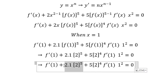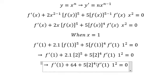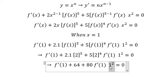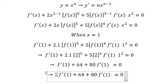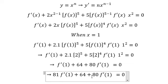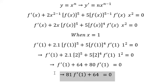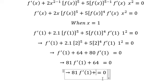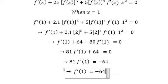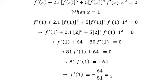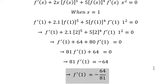For this part we calculate: we get 64 here, and 80 here, and this coefficient is one. So 80 plus one times 80 gives us 81. Now we move 64 to the right side, then divide both sides by 81 to get the final answer. Thank you for watching.